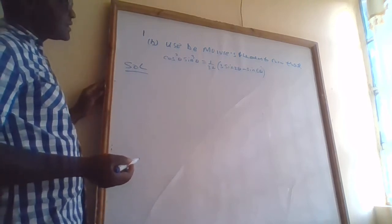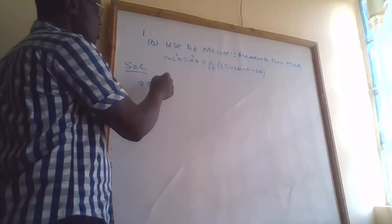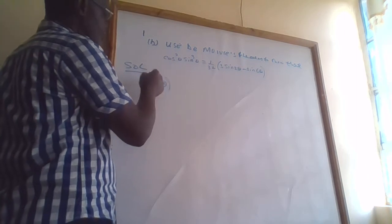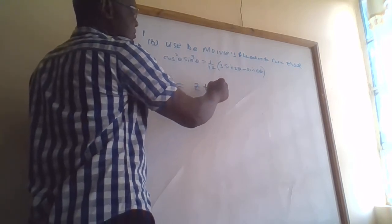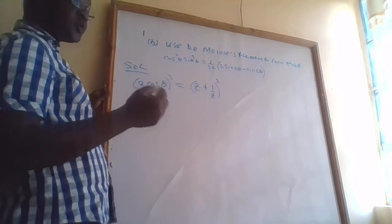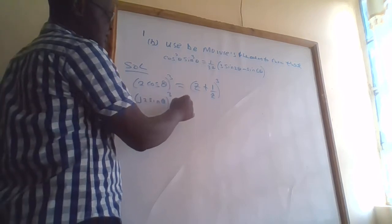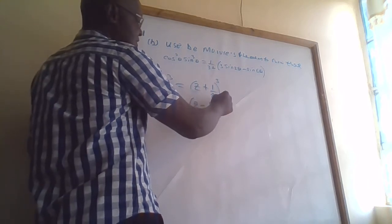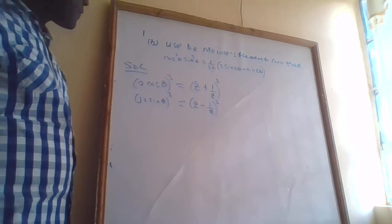For the solution, first we need to know that 2cosθ cubed is the same as (z + 1/z) cubed, and also that (2j sinθ) cubed is the same as (z - 1/z) cubed. These are the basics of complex numbers.